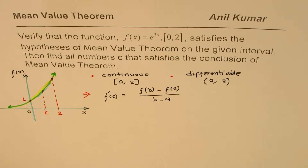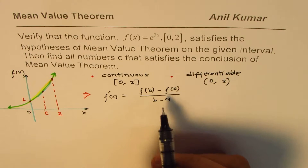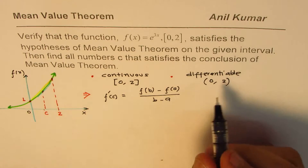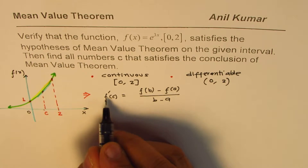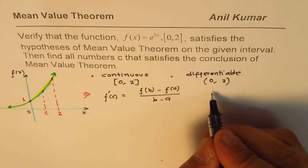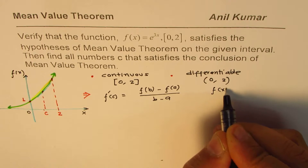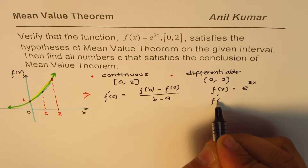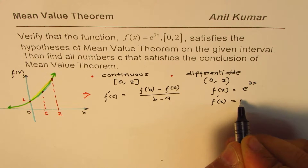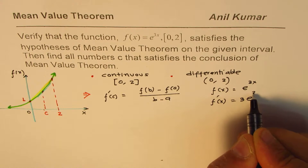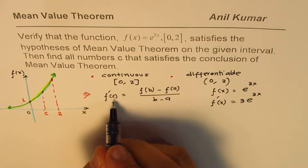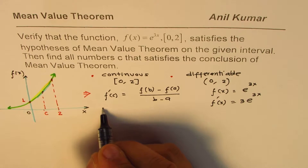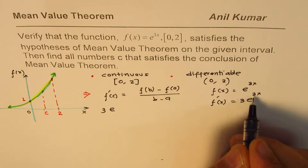Let us see how to do it. We can substitute the values. We know f(x) = e^(3x), so f'(x) = 3e^(3x). Therefore f'(c) = 3e^(3c).